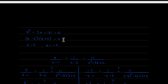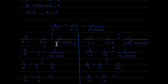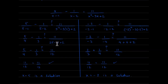Using the zero product property: x minus 5 equals 0 gives x equals 5, and x plus 2 equals 0 gives x equals negative 2. Plugging both into the original equation confirms that both x equals 5 and x equals negative 2 are solutions.